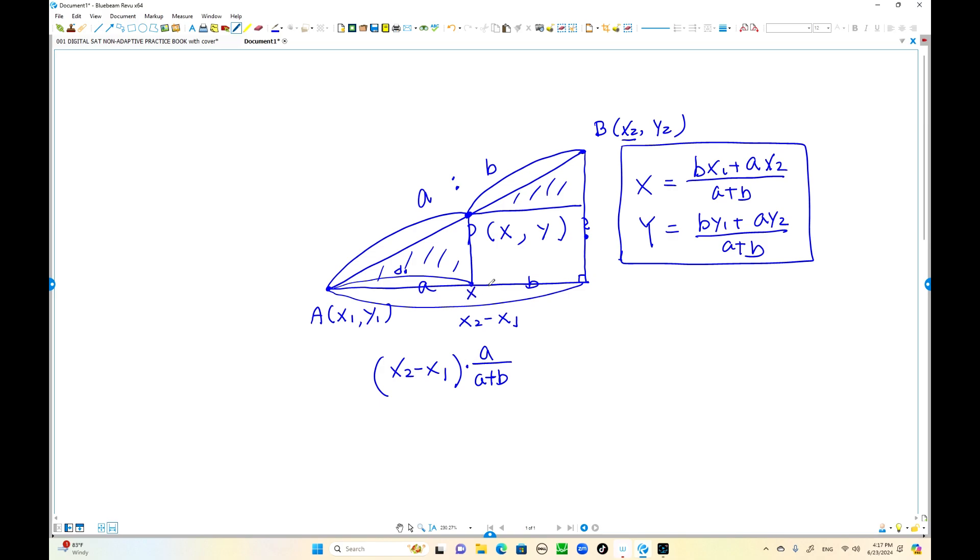So what is the x coordinate? The x coordinate can be obtained from here. We start at this point x1 plus the distance D1, that equals the x coordinate of point P. When you simplify this one, A plus B is the common denominator.